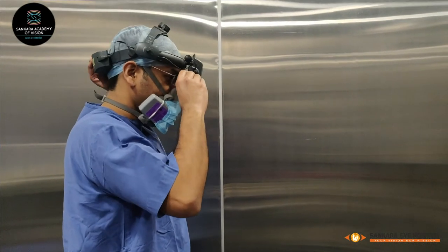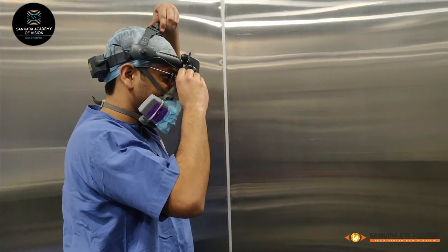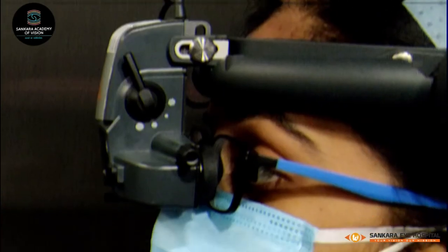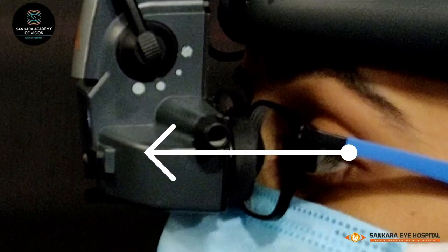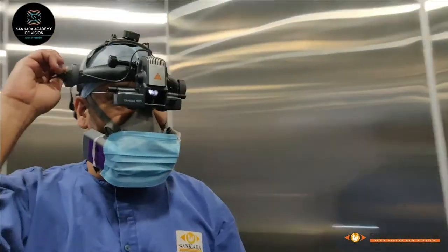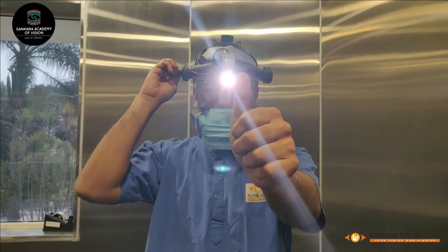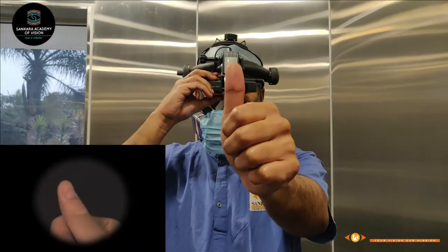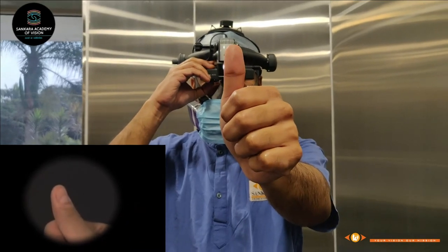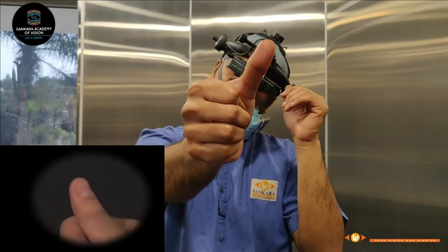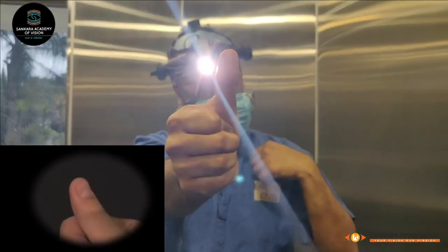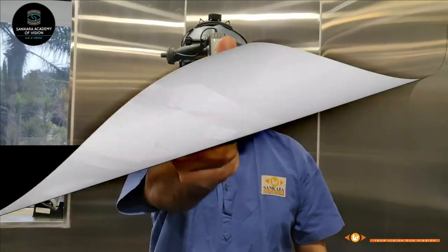Adjust the headband so that the scope is secure on your head. Eyepieces should be as close to the pupil as possible and perpendicular to the pupillary axis. Switch on the light source. Adjust your interpupillary distance and make sure the light spot is well centered from both oculars at arm's distance. Move your head sideways and check that your finger is still in the visual field.